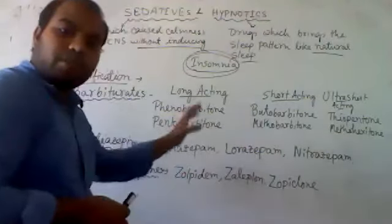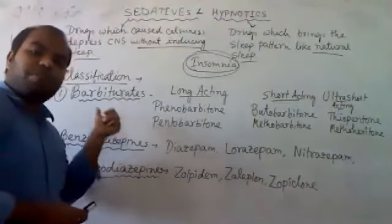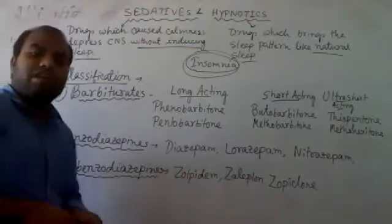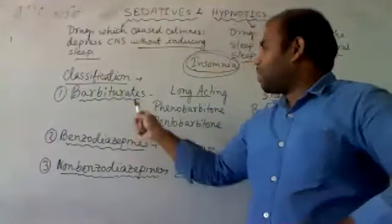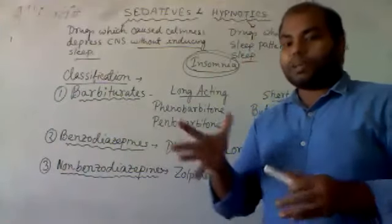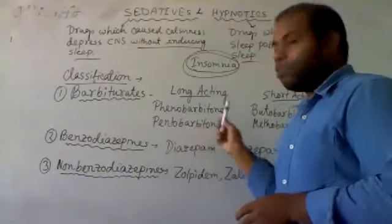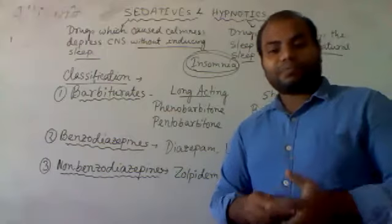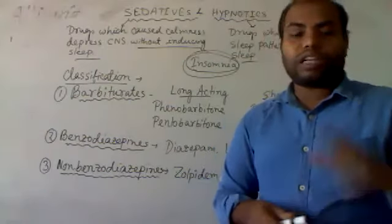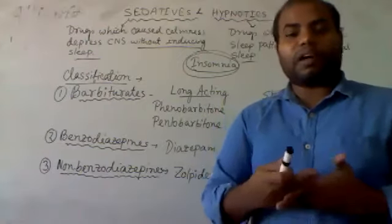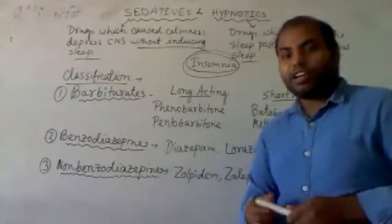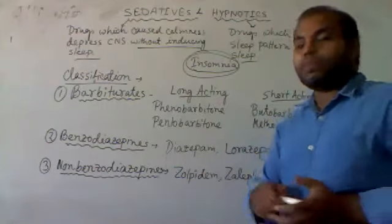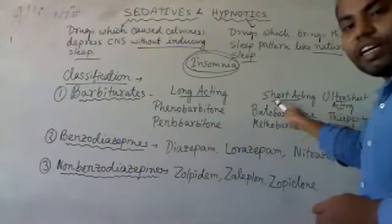So this covers the sedative-hypnotic introduction. Moving to classifications: drugs are classified according to chemical classification into barbiturates, benzodiazepines, and non-benzodiazepine hypnotics. The barbiturates are the most important class. They are classified by duration of action as long-acting, short-acting, and ultra-short-acting.